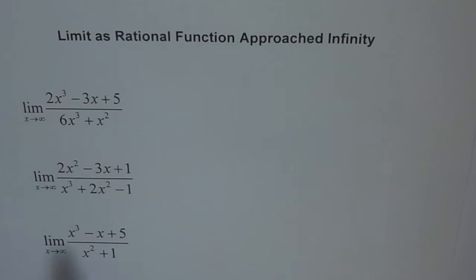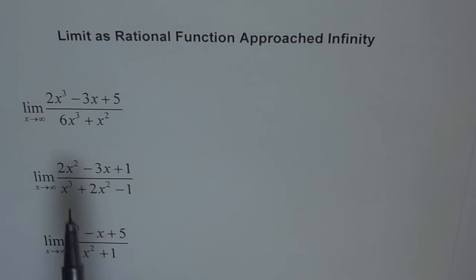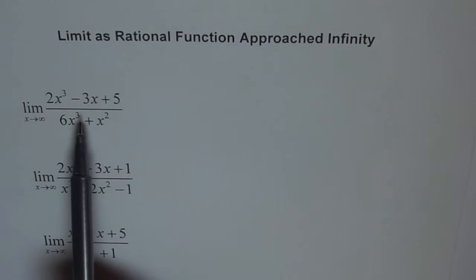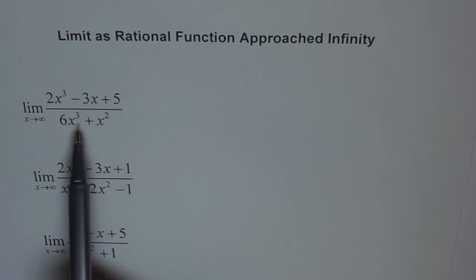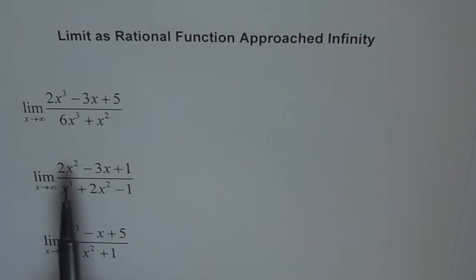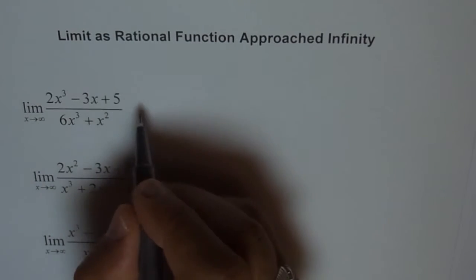I will show you an approach which can be applied to any rational function and that will help you find the limit as the function approaches infinity. The approach is to factor out whatever can be factored. Here we can factor out x³ from the numerator and x³ from the denominator. Let's do that and see what happens.